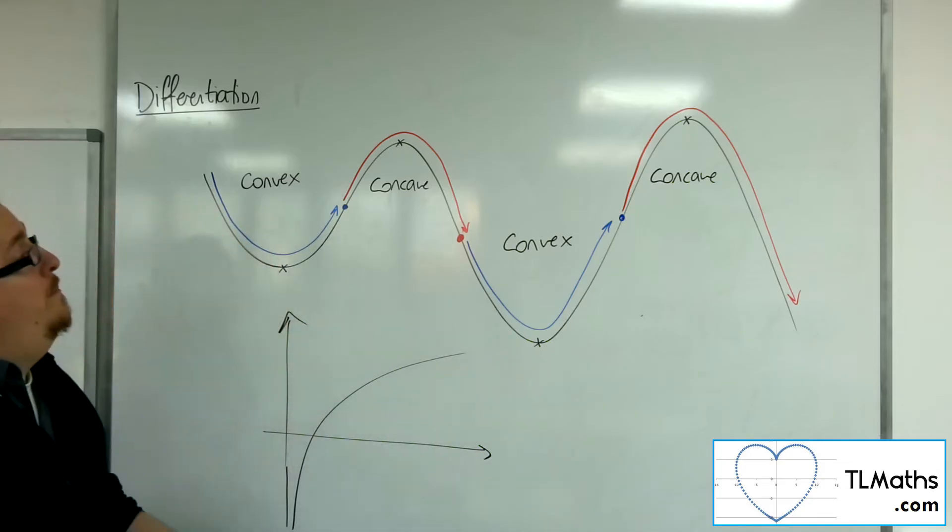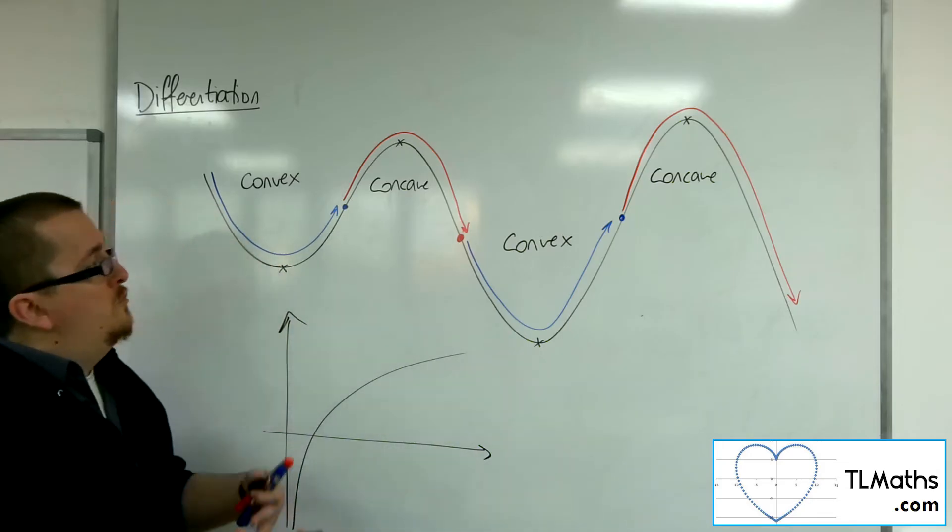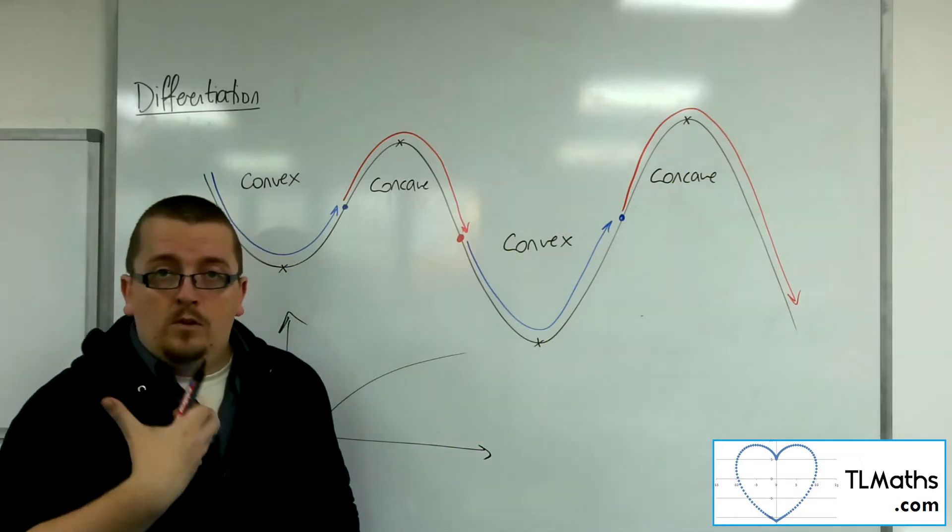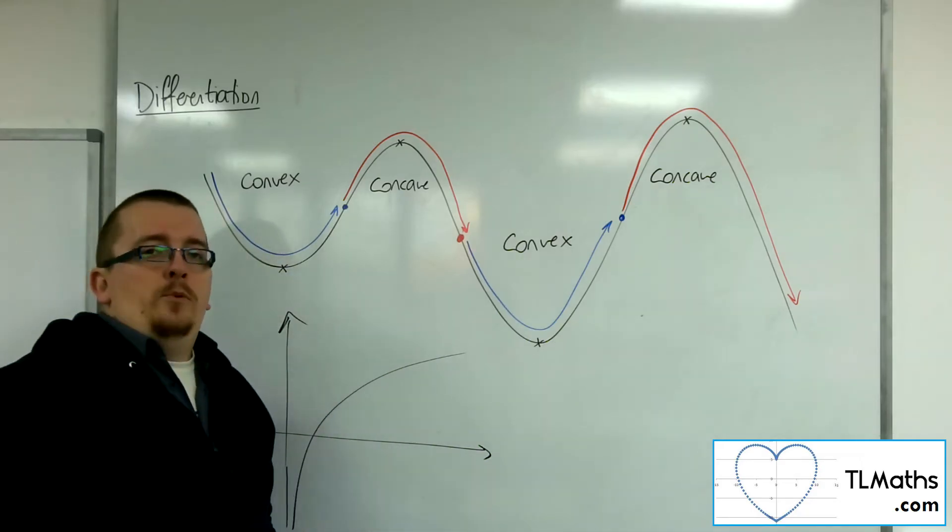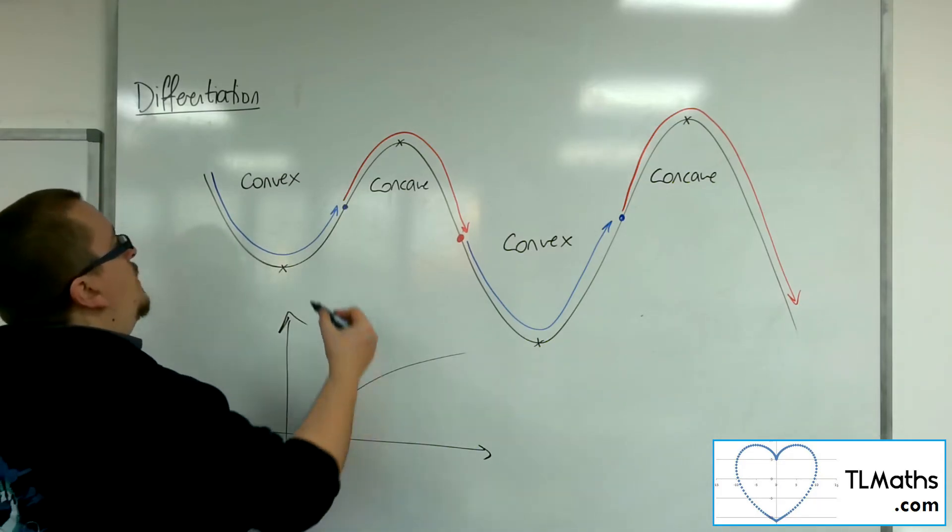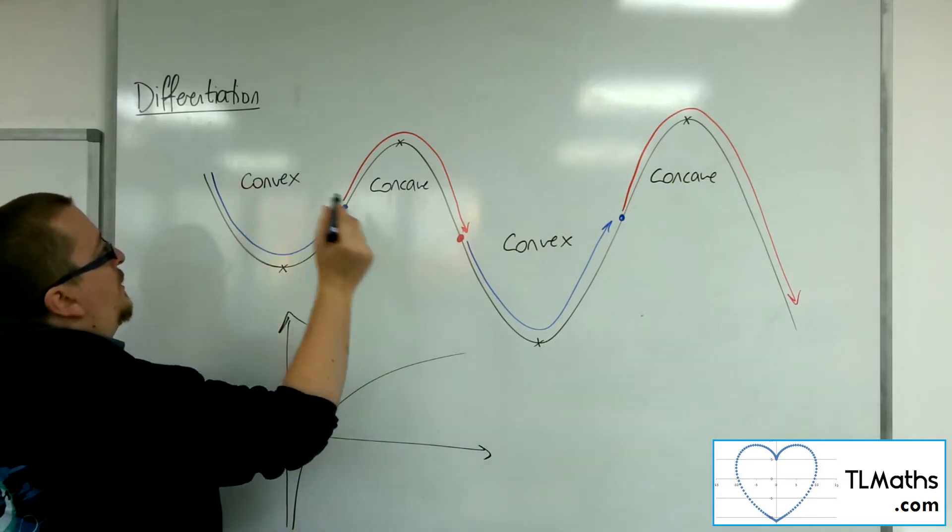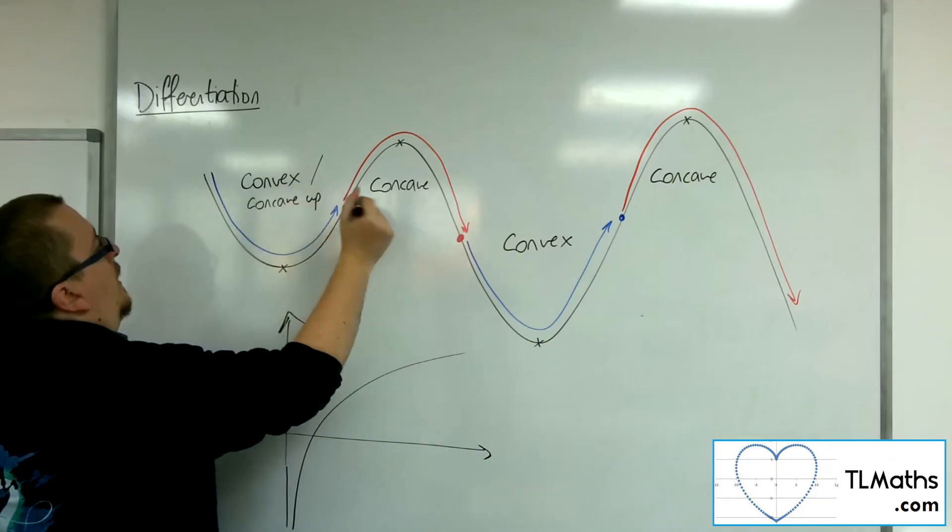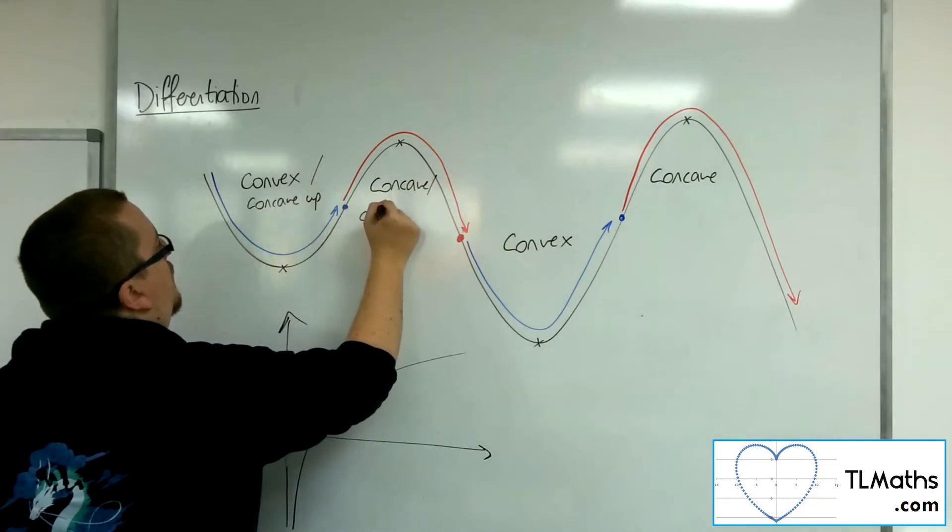Now, some people have great difficulty with remembering which is convex and which is concave. And to be quite honest, I do as well. I always have. So there is another way of writing it. You can refer to convex and concave as concave up and concave down.